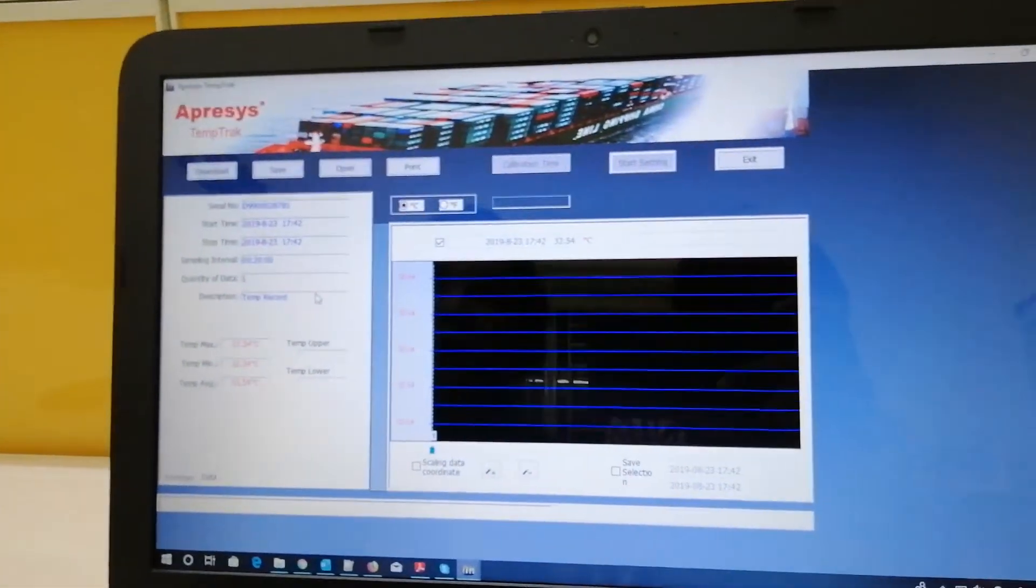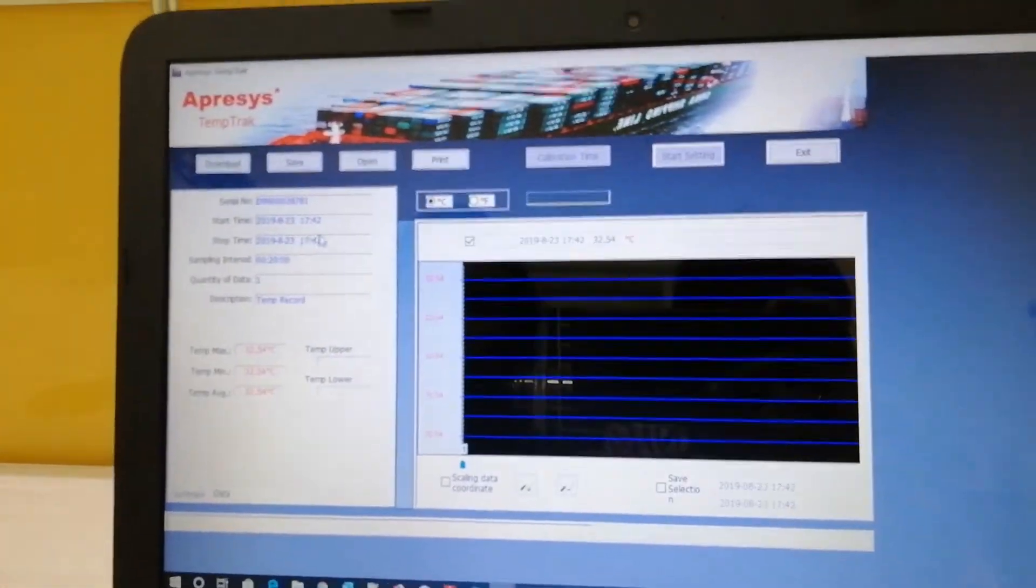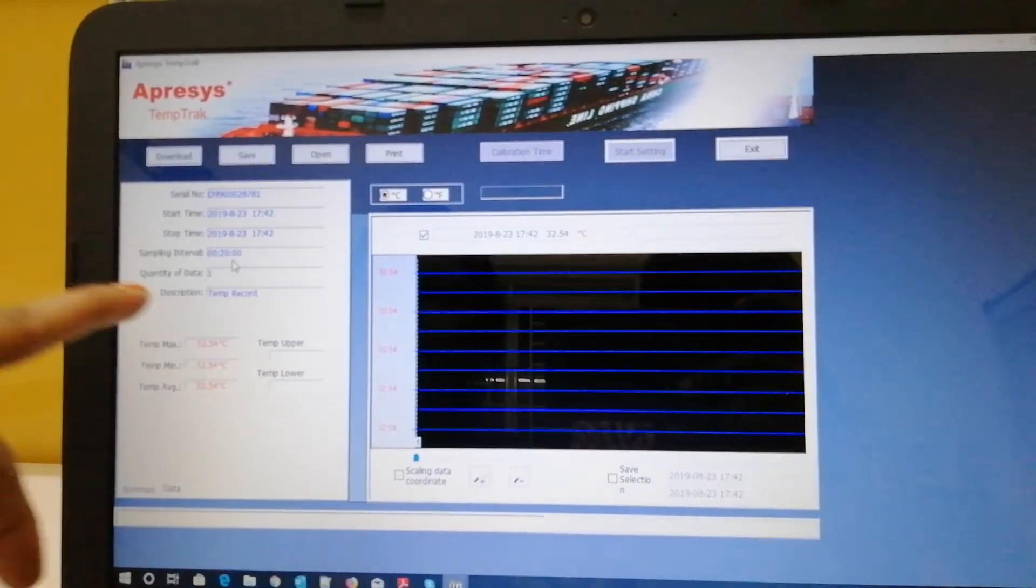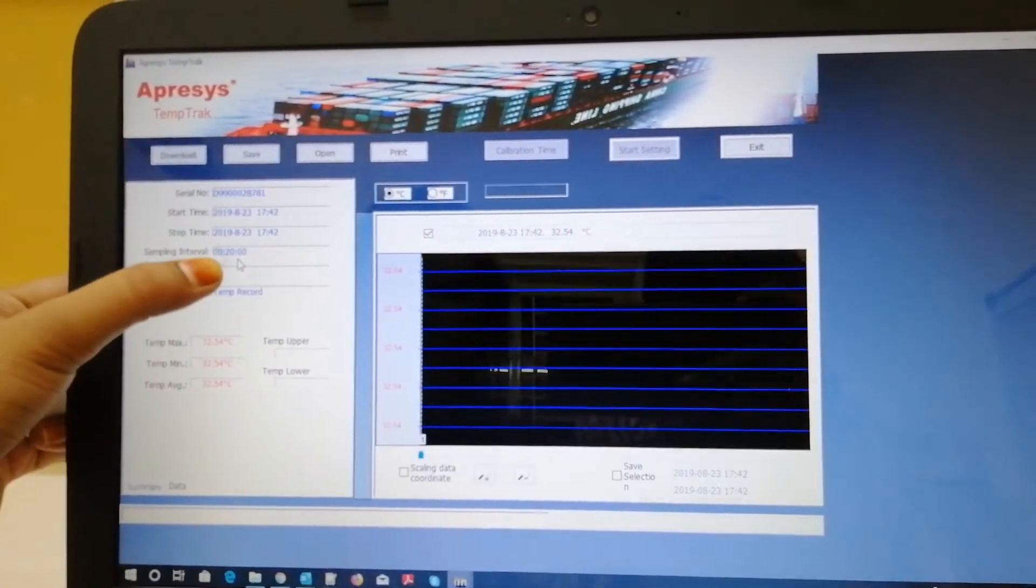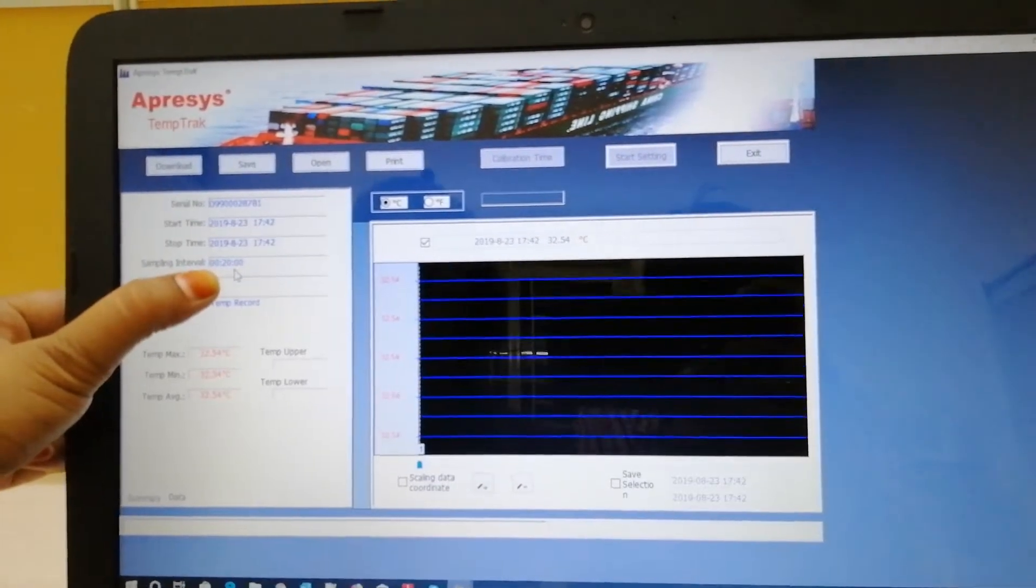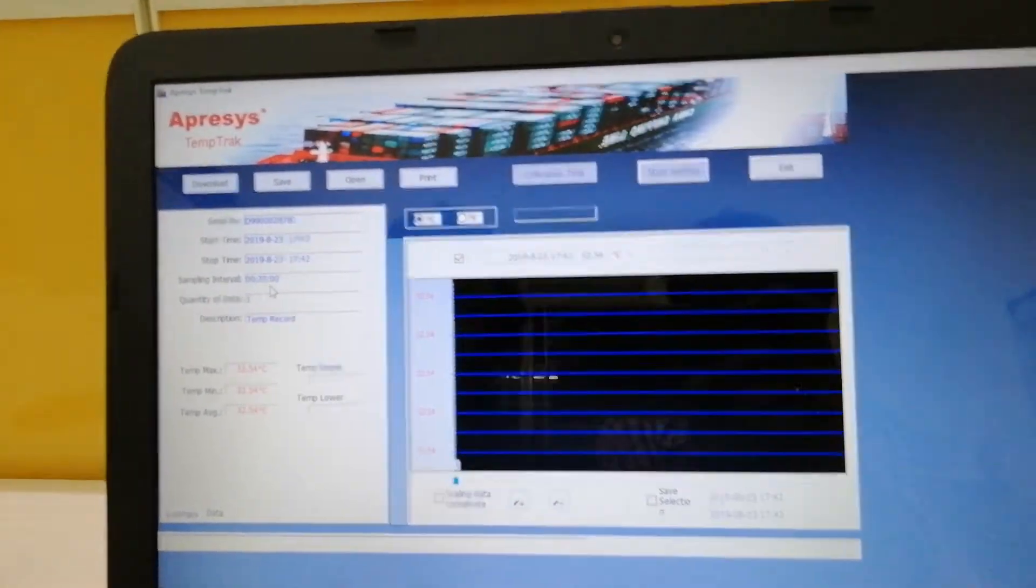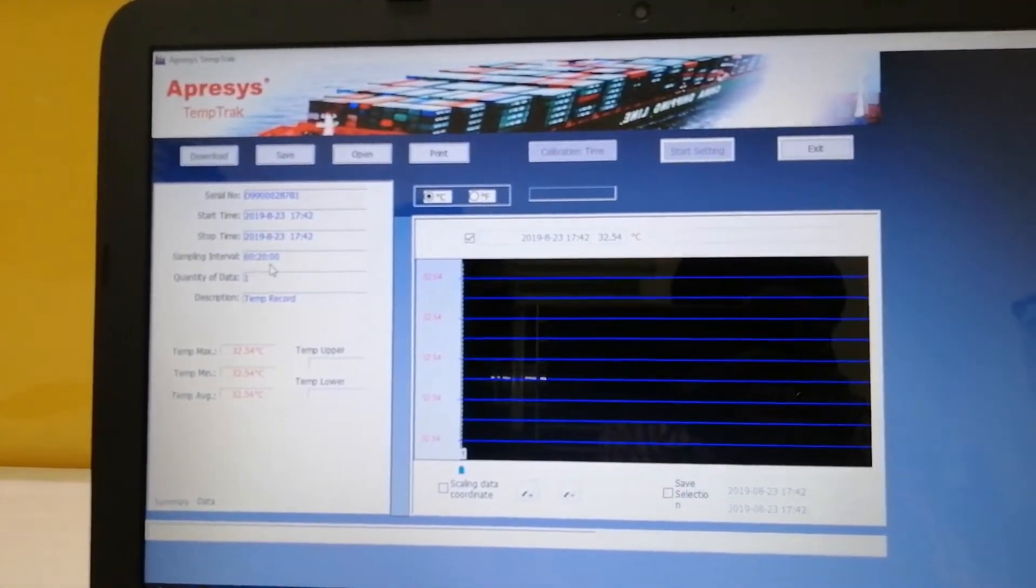These are the parameters: serial number, start time, stop time, and sampling interval, which is non-editable and fixed. For D99, it is 20 minutes. For D25 and D50, the sampling interval will be different.